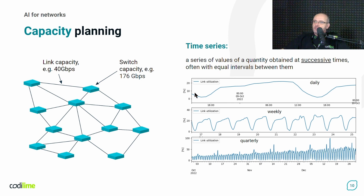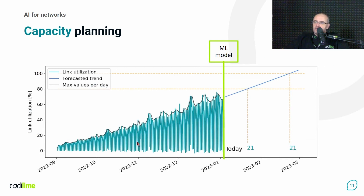Here we could see a link utilization given in percent — in the perspective of one day, in the perspective of a couple of days, and in the longer-term perspective, where we could see a clear increasing trend. Such historical data can be used by various machine learning algorithms to build a model and to evaluate the future resource utilization trend.